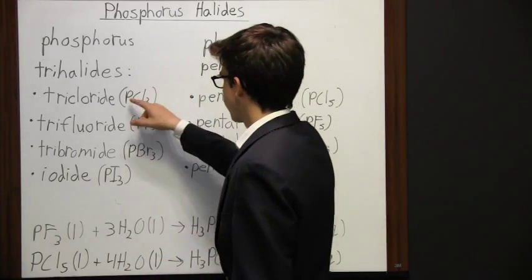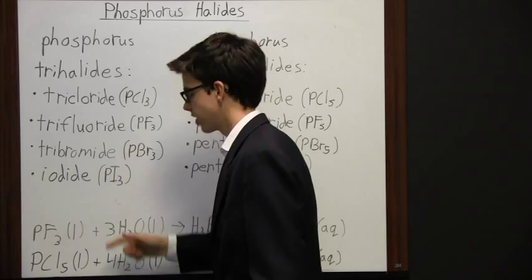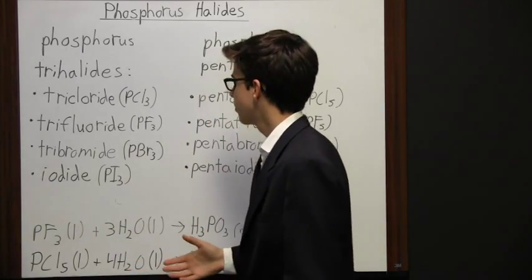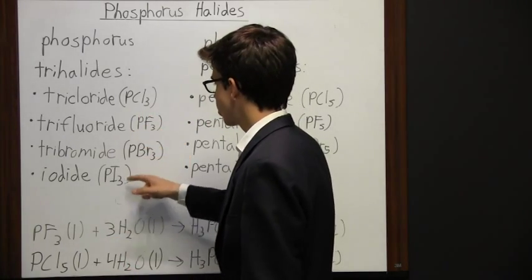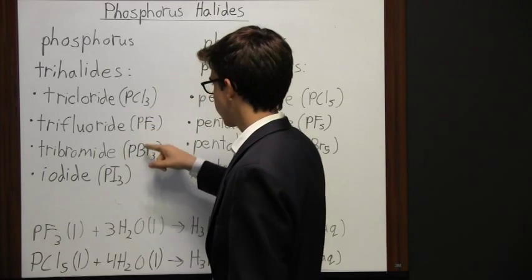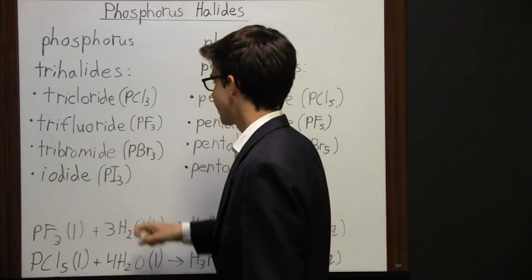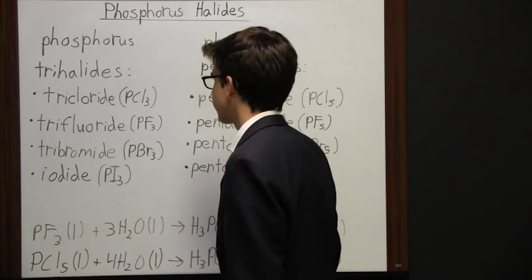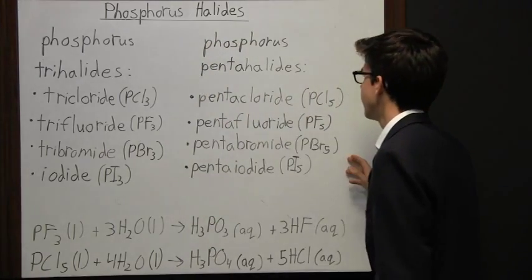Notice here that we have P every time, which stands for phosphorus in its elemental form, coupled each time with a different halogen. Here it's chlorine, here it's fluorine, here it's bromine, and here it's iodine. Now over here we have phosphorus pentahalides.